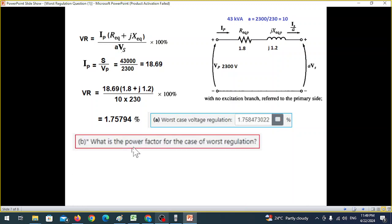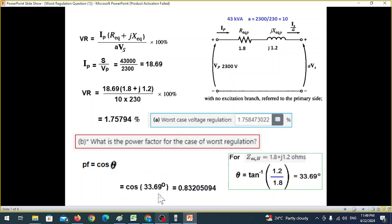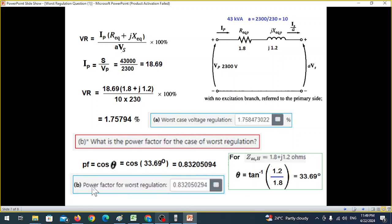Now coming to the second part: what is the power factor for the case of worst regulation? This was the value of VR, the worst case. Power factor is PF equals cos theta. We had calculated the angle to be 33.69 degrees. So we'll plug in that angle. And this is our answer for power factor. Here also we are very close to the answer given in the book, 0.832.